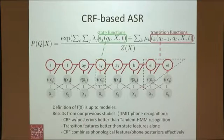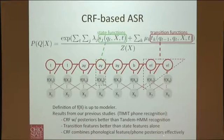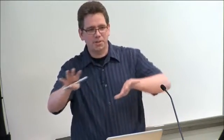Summarizing results from previous studies on the TIMIT phone recognition task: we were beating tandem HMM systems using posteriors as input with many fewer parameters. Even a monophone-based CRF was beating a triphone-based HMM — though that HMM was not discriminatively trained. Transition features helped quite a bit, and combining a large number of phonological features with phone posteriors proved an effective combination technique.